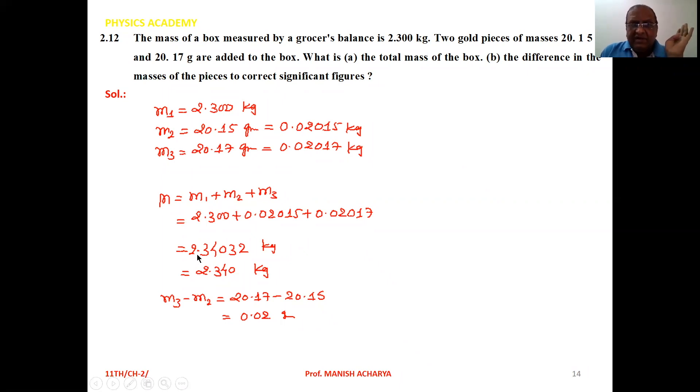So your answer comes to 2.34032 kg. You have to restrict it to 4 digits - 2, 3, 4, and 0. So 2.340 kg.